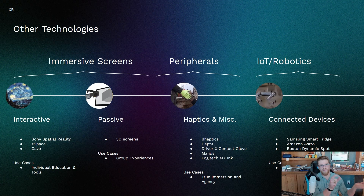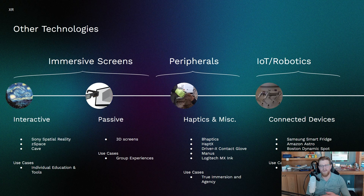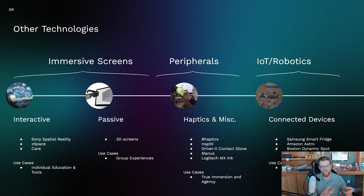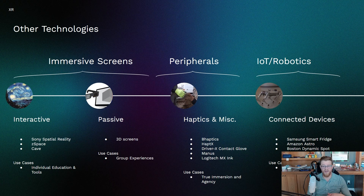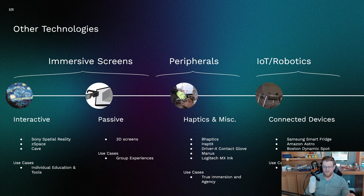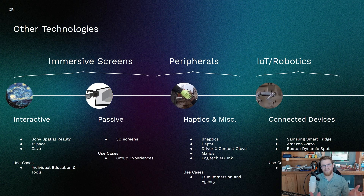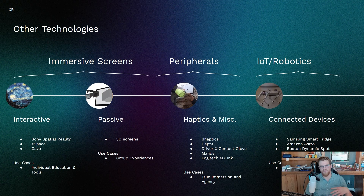You also have the Logitech MX Ink, a 3D pen in space that allows you to paint and draw in space. The idea is that these peripherals are giving you true immersion and agency. As a quick definition, haptics more or less is anything that gives you force feedback — so if you feel a rumble or a pushback, that adds the next layer of realism. Last thing I have here is IoT and robotics — connected devices like Samsung smart fridges, Amazon Astro Home Robot, Boston Dynamics Spot — the idea being XR devices paired with utility tools throughout your house connected through IoT, so you can have on your Apple Vision Pro and change your thermostat, for example.